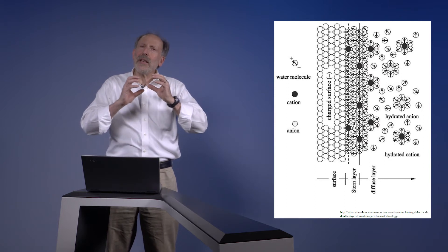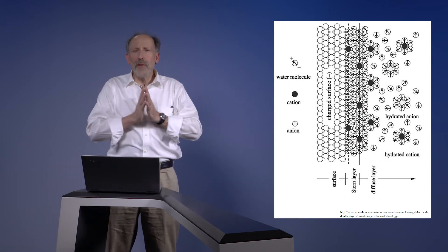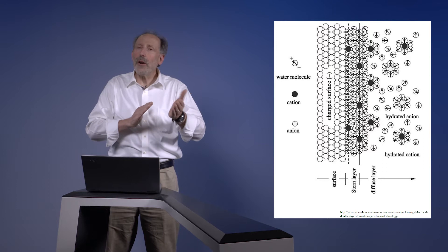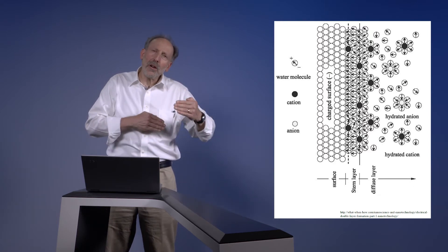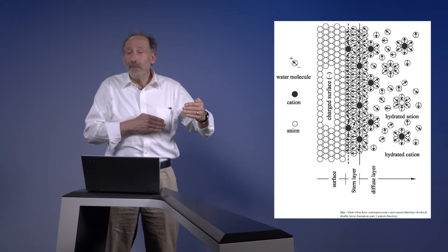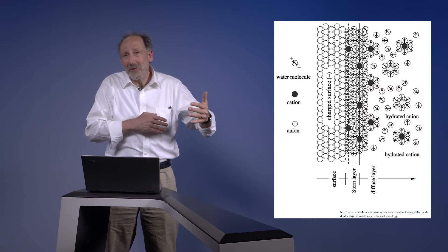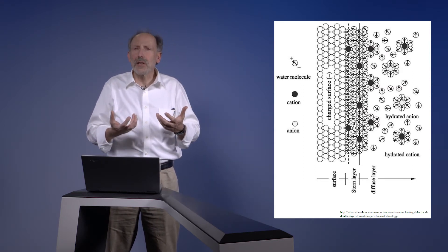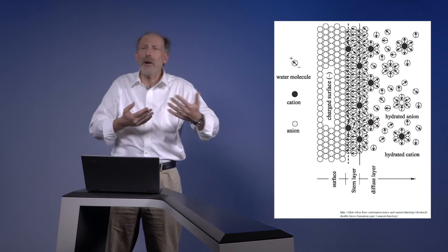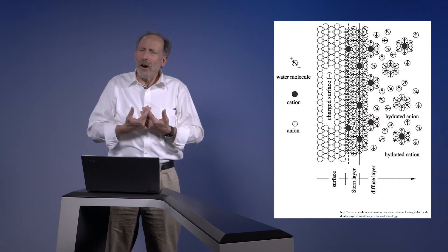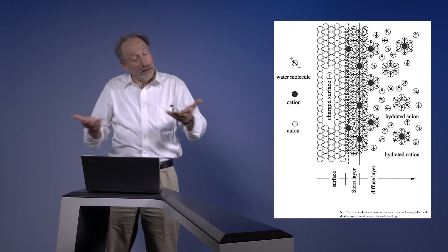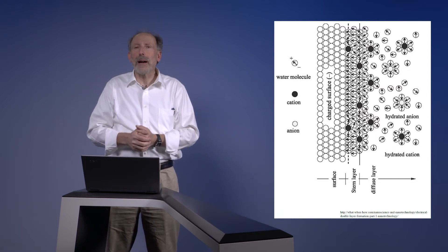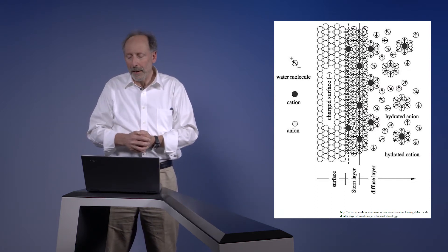And that means that that water is also very tightly bound. Some of that water will not evaporate off that surface till over, well, between 500 and 600 degrees centigrade. So it's really almost chemically part of the system. So we have to be very careful when we think about water in soils. We don't often think about the fact that some of that water is essentially chemically bound in a nearly permanent way.